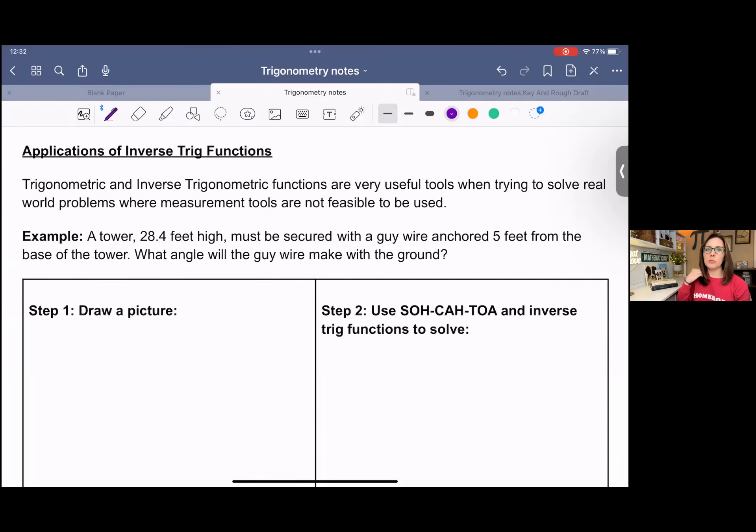With these word problems or story problems, it's usually very helpful to go ahead and draw a picture. And that picture is going to give you a really good idea as to what you need to do to actually solve the problem. So we have a first example: a tower 28.4 feet high must be secured with a guy wire anchored five feet from the base of the tower. What angle will the guy wire make with the ground?